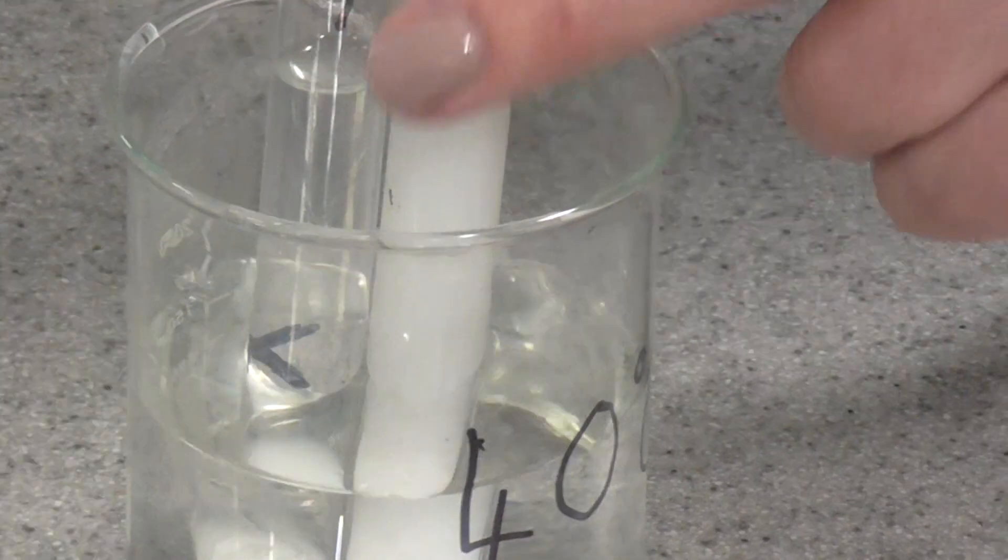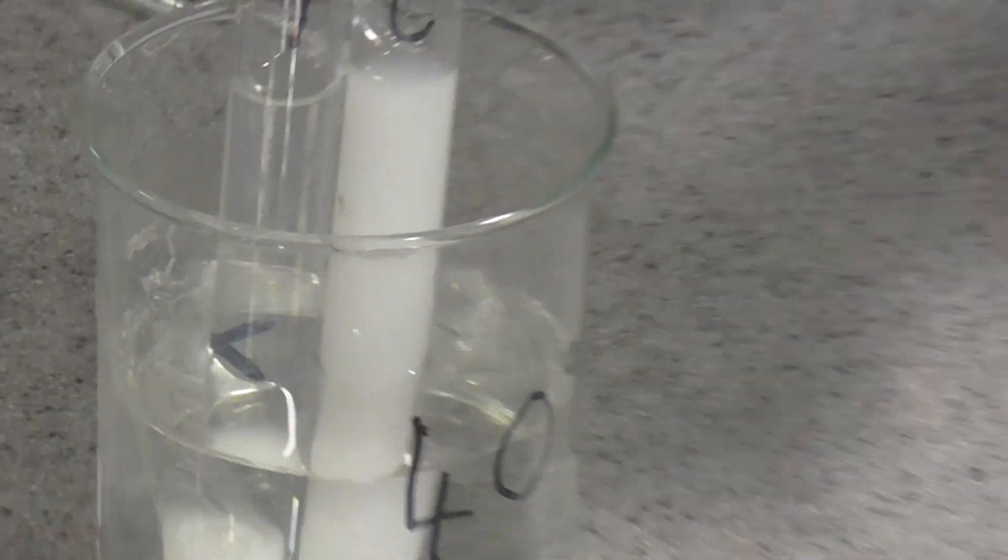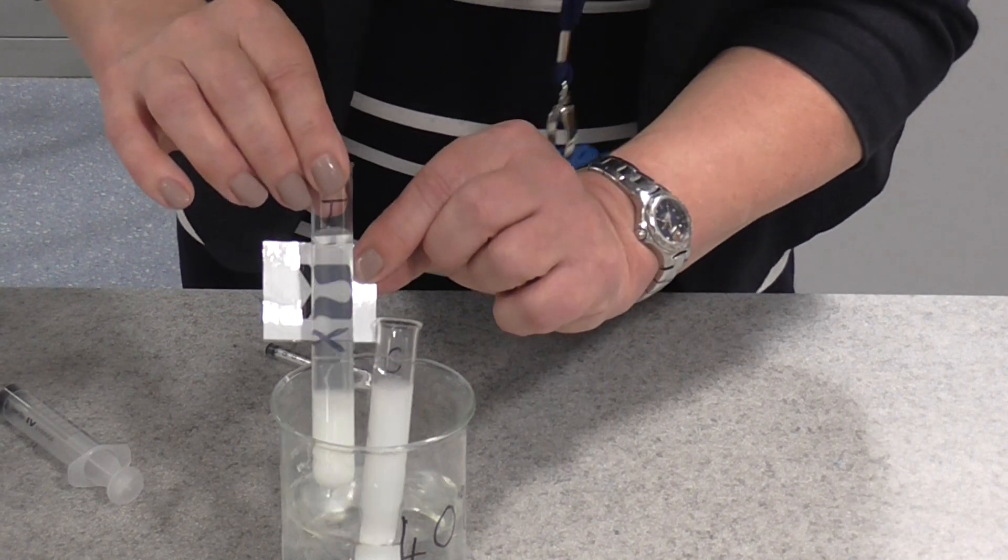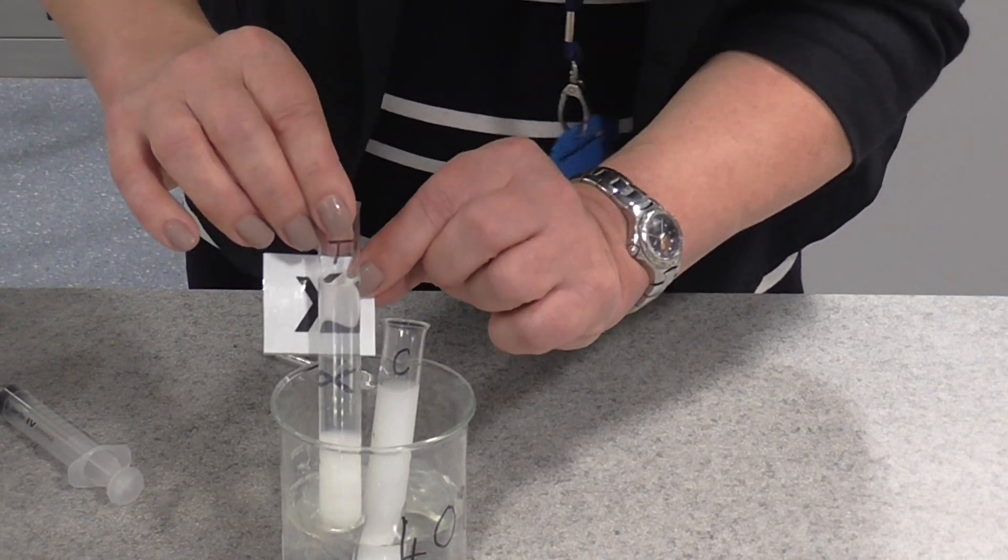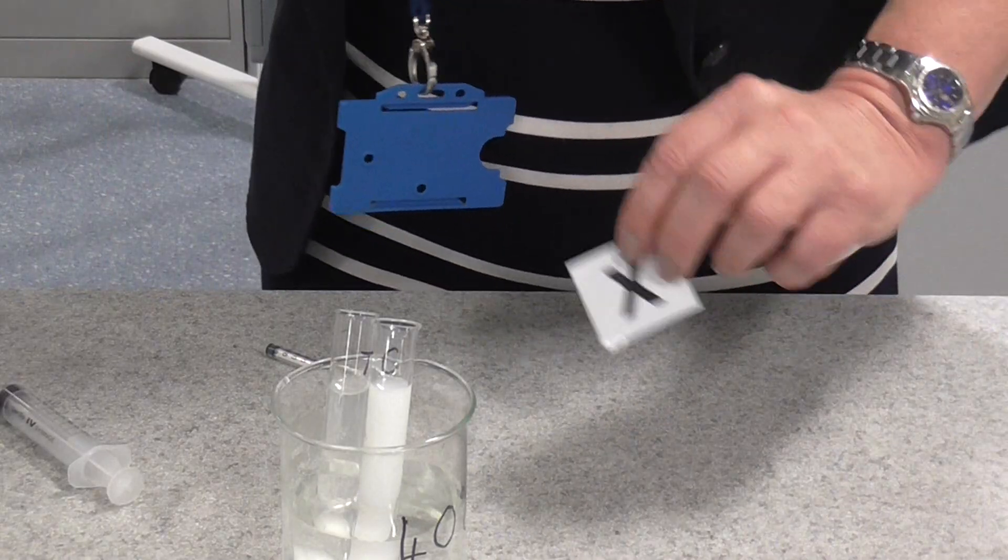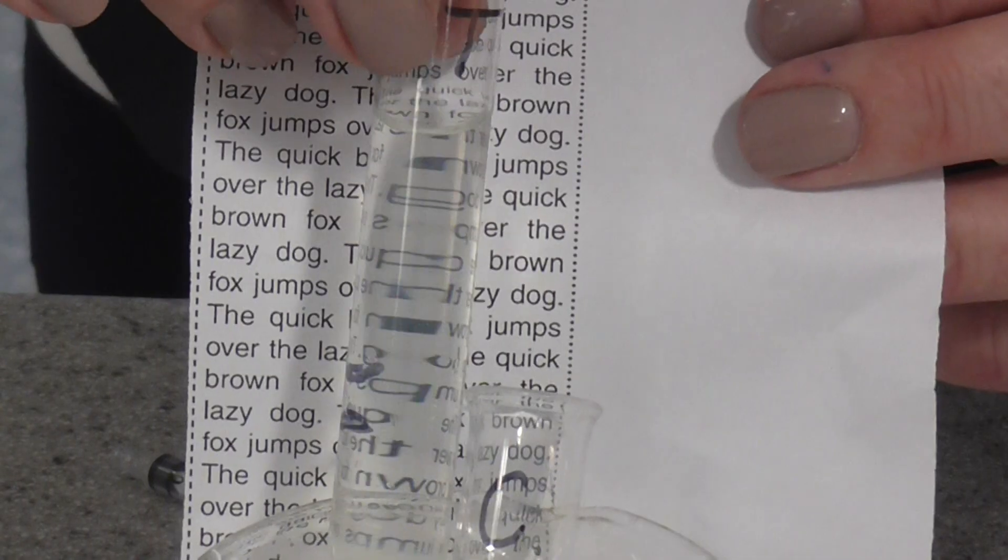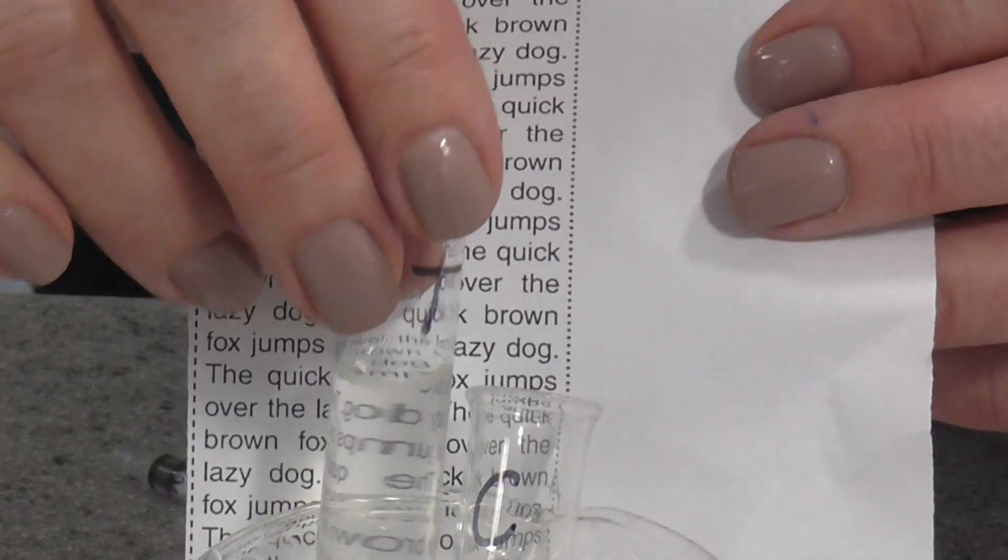There are other ways of doing this. You can actually have a printed X and clamp the tube in front of it, and time how long until it becomes visible. Or you can clamp your tube in front of some printed writing and time how long until you can actually read the text. That is the end point of this reaction.